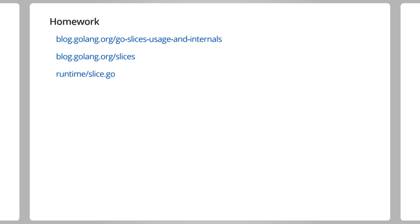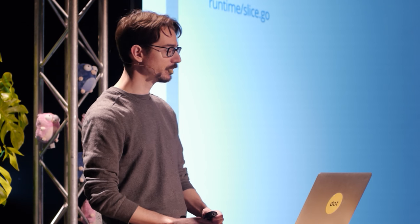Slices are very convenient. They are dynamically sized arrays. You have order-one append, bounds checks on all the accesses, and length and capacity are part of the slice so they never get out of sync — which obviously is a big issue with C. All the basics are covered in these two blog posts, and as homework you should go and read the slice.go package in the runtime package.